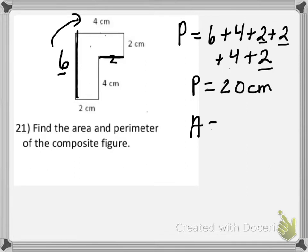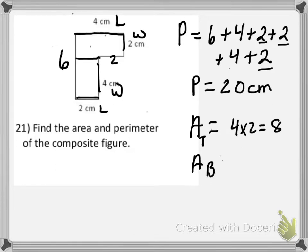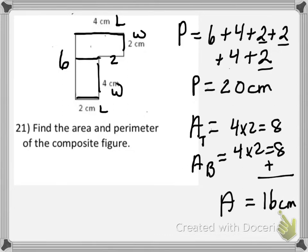Now for the area of the composite figure. We split it into two rectangles — a top rectangle and a bottom rectangle. The top rectangle has dimensions of length 4 and width 2, giving an area of 8. The bottom rectangle also has length 2 and width 4, giving an area of 8. Adding those two areas together gives a total area of 16 centimeters squared.